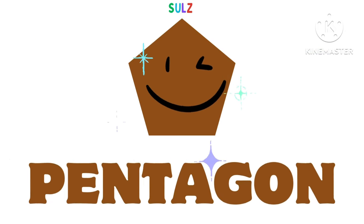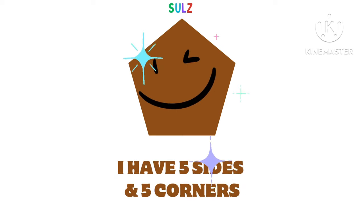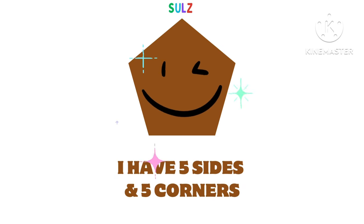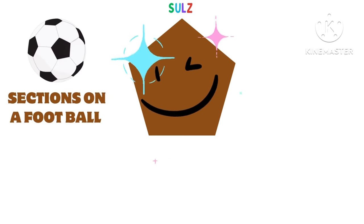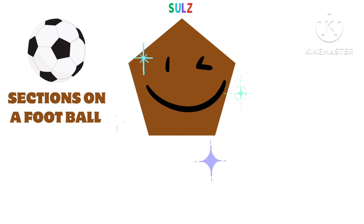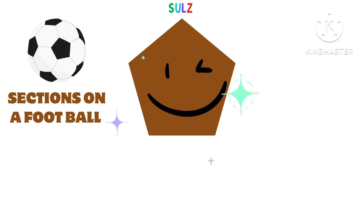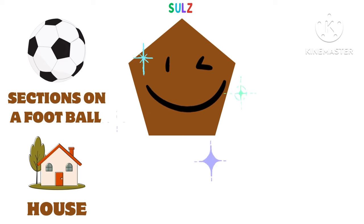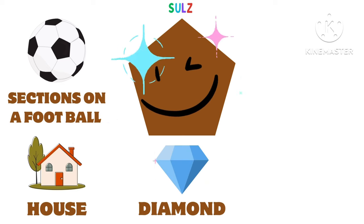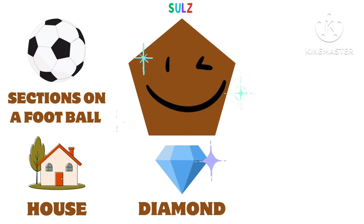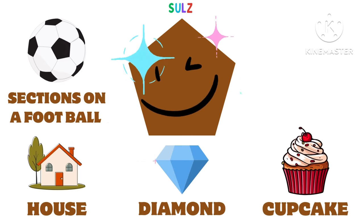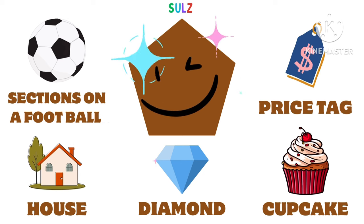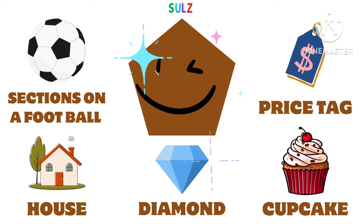Hi, I am pentagon. I have five sides and five corners. You can see my shape on the sections of a football, house, diamond, cupcake, and price tag.